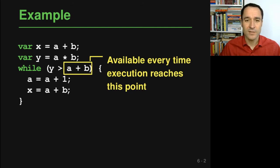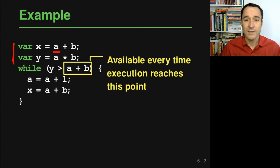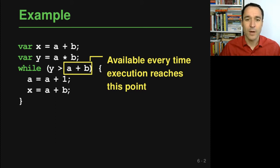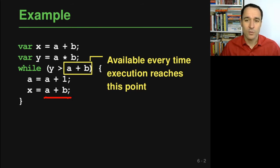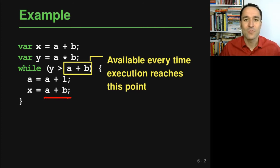There are two ways to reach the while loop conditional: coming down from the initial statements, in which case a+b has already been computed and a and b haven't changed; or returning from the loop body back to the conditional, in which case a+b was computed in the loop body and a and b again haven't changed. So every time execution reaches this place, the expression a+b has already been computed — it is an available expression. This is the kind of information we want to compute.